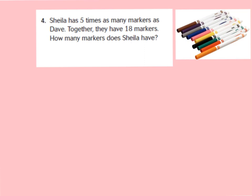Now let's drop down to number 4. Number 4 reads: Sheila has 5 times as many markers as Dave. Together, they have 18 markers. How many markers does Sheila have? We know that this is a comparison problem because we are comparing Sheila and Dave's markers. So we're going to draw our model for a comparison problem.